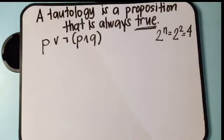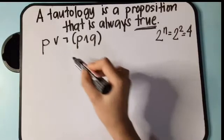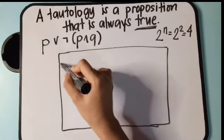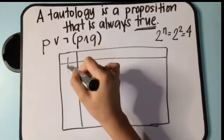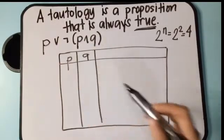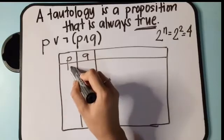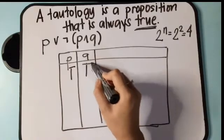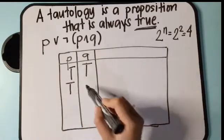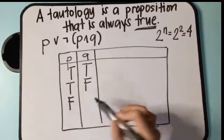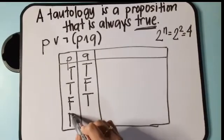We look at all possible combinations of truth values for P and Q: P true and Q true, P true and Q false, P false and Q true, and P false and Q false. Since there is no given declarative sentence for the propositions, we list down all possible truth values.